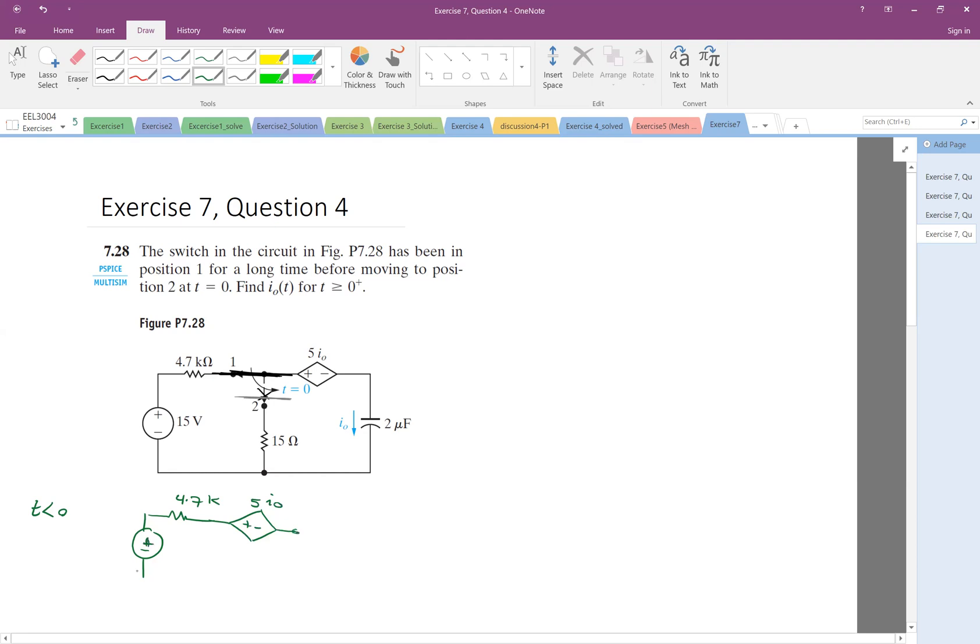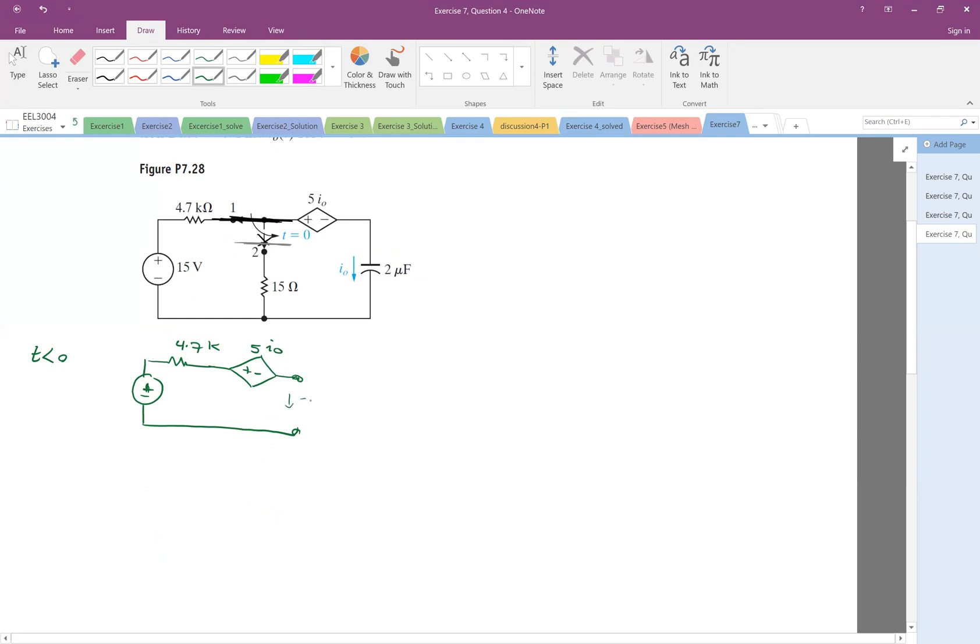Then what happens to the capacitor? The capacitor will be an open circuit. And what's I0? Because it's an open circuit, I0 is 0. So I0 at 0 minus is 0, right before the switch. And let's see, I don't know if we need V0 here or not later, but we just want to find it. What is V0? Okay, so this is open circuit.